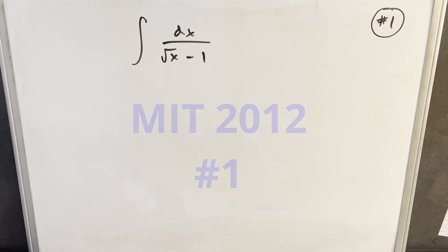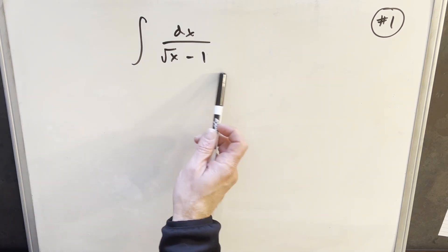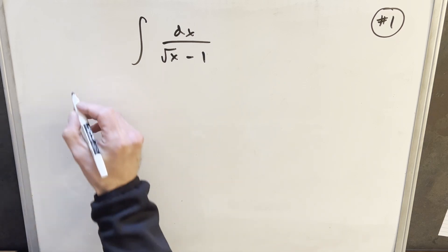To get started, I want to use a u-substitution. We could substitute just square root of x, but I think it's better to take the whole denominator so we get the minus 1 for free. So rather than making u equal to square root of x, I'll substitute the whole denominator.